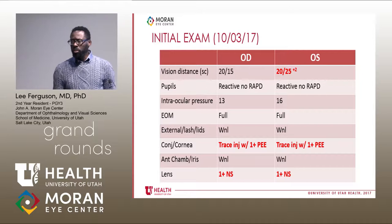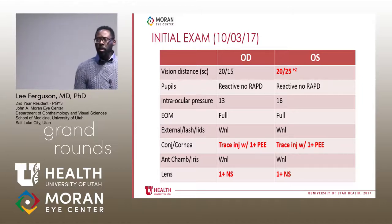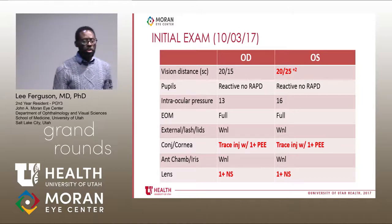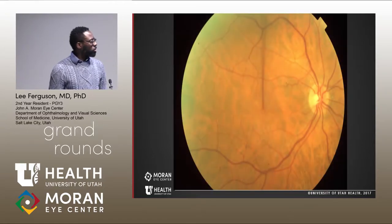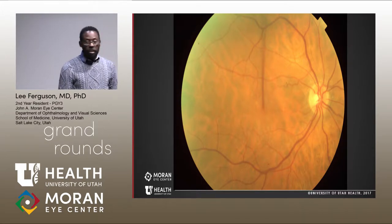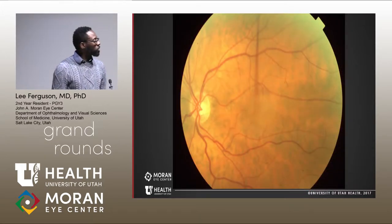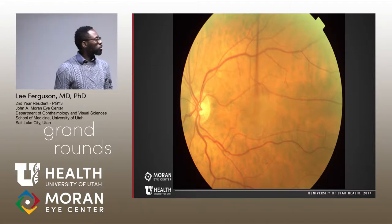His past ocular history was significant for cataracts and some mild diabetic retinopathy. On examination, he had some mild visual acuity change, trace ocular surface disease, and mild cataracts. On dilated fundus exam, his right fundus was pretty much unremarkable with no issues to speak of.